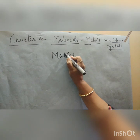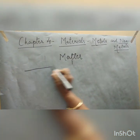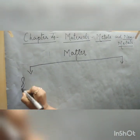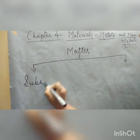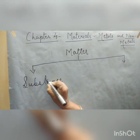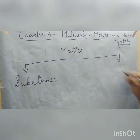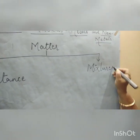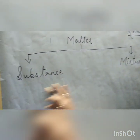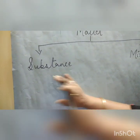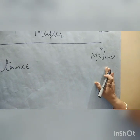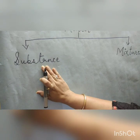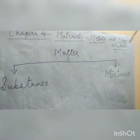There are two kinds of matter. The first kind is substances and the second kind is mixtures. Our portion is from substances only. We will not go through mixtures in this standard, that is standard 8. Under substances we will study about metals and non-metals.